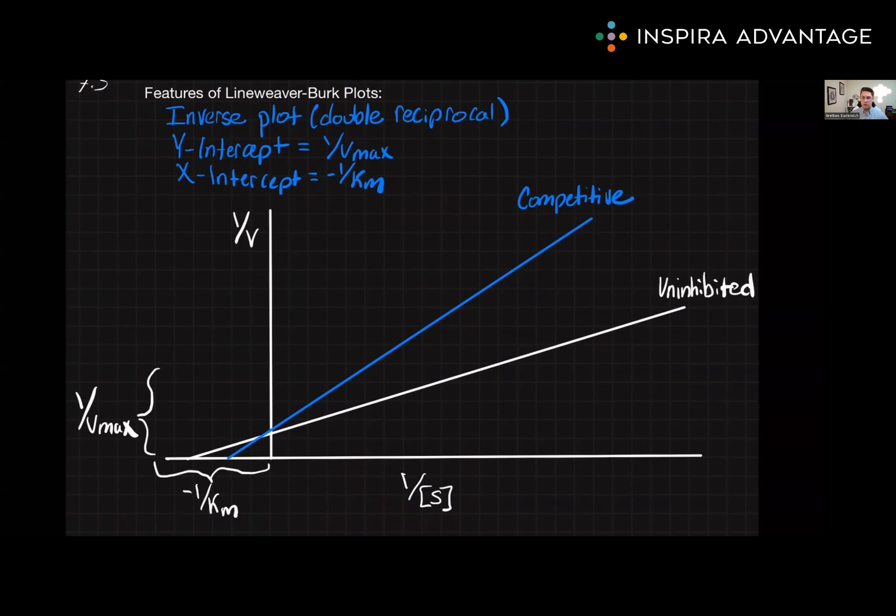Keep in mind that these are inverse values. This means that as you move towards the origin, or the 0,0 point, the numbers are actually getting bigger. So this plot right here means we have a higher concentration of substrate than we do up here. And down here means we have a higher velocity than we do up here.